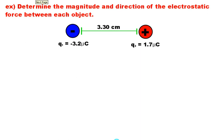This is determine the magnitude and direction of the electrostatic force between two objects. We've got a negative charge here, and we've got a positive charge here. They've got a separation of 3.3 centimeters, and we've got the charge of each of them. They're measured in microcoulombs. So the first step is actually pretty straightforward, and most students don't have much trouble with this. It's just finding the magnitude, first of all, of this electrostatic force.